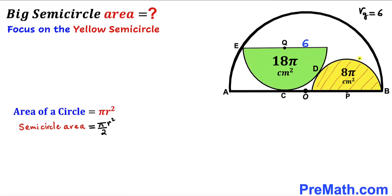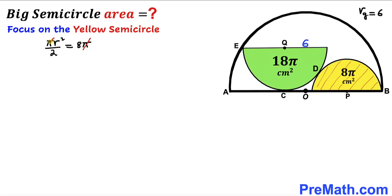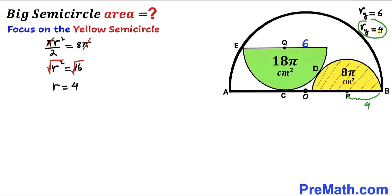Next, let's focus on the yellow semicircle, whose area is 8π. Using the same semicircle area formula, π r² / 2 = 8π. Pi cancels, giving r² = 16. Taking the square root, the radius of the yellow semicircle is 4 cm. We label this r_y = 4.